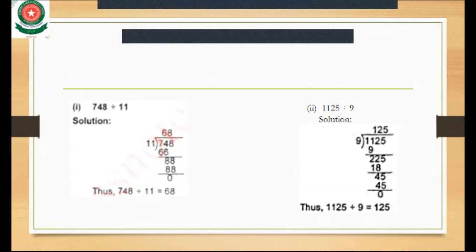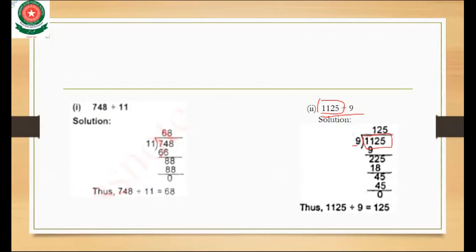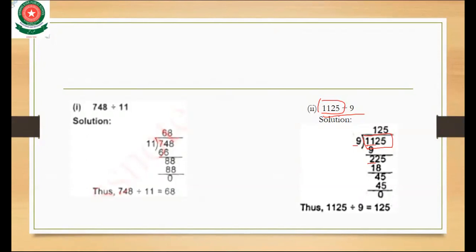Part 2: 1125 divided by 9. We place 1125 inside the division form and 9 outside. We take the first two digits, 11. Since 9 times 2 is 18 and 18 is greater than 11, we take 9 times 1 which is 9. Subtracting, 11 minus 9 equals 2.